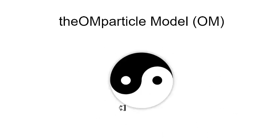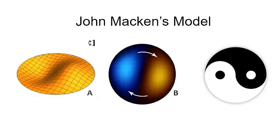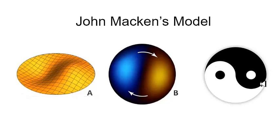I use the yin-yang symbol as the schematic for the Ohm Particle Model. This is very similar to John Macken's model, where he depicts his particles as a rotating or orbiting circular wave with a hill and a valley. This is a spinning model as he depicts, but the yin-yang model depicts the spin in a different manner. The reason I like John's model so much is because he gave me another piece of the puzzle, another clue as to the meaning of this schematic. For a while, I didn't know what these dots were.